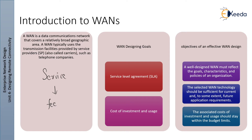Designing a WAN is a challenging task. The first design step is to understand the WAN's networking requirements, driven by two primary goals: first is Service Level Agreement, and second is cost of investment and uses. Regarding SLA, networks carry application information between computers; if applications are not available to users, the network fails to achieve its design objective. Organizations need to define acceptable levels of service such as bandwidth, latency, packet loss, and so forth for applications running across the WAN.